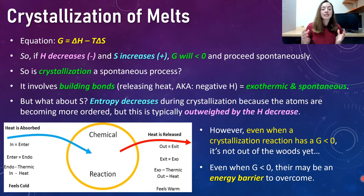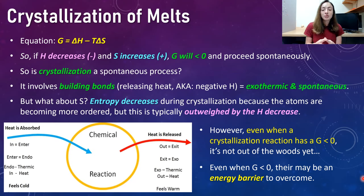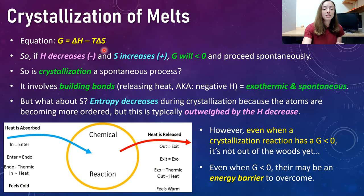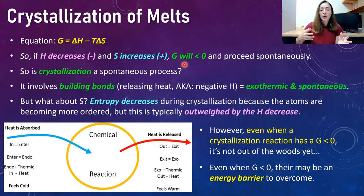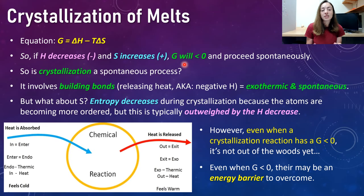Summing it up: if H decreases and S increases — meaning heat is released and disorder is increased — then the G value will be lower than zero and the reaction will proceed spontaneously. We can see that if H is sufficiently low or negative, and the change in S is sufficiently positive, then G will definitely be below zero. When G is less than zero, that reaction will just go ahead and start because that release of heat and increase in disorder is thermodynamically favorable.